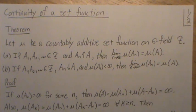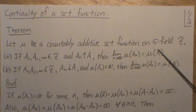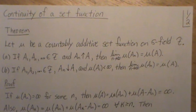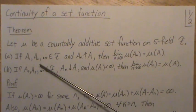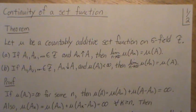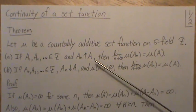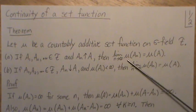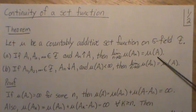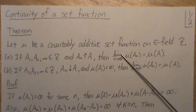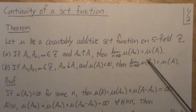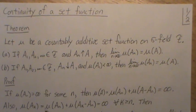First the theorem: let mu be a countably additive set function on a sigma field F. If A1 through An are all sets in the sigma field F and An are increasing sets to a limit A, then the limit of the measure of An is equal to the measure of A. What this is saying is we can take this limit inside the measure — the limit of An is A.